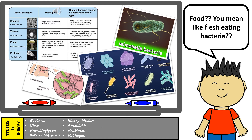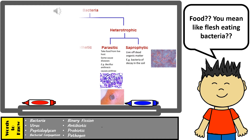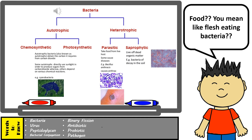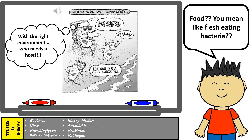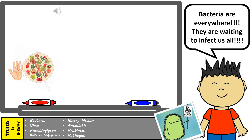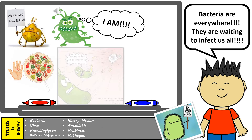Some bacteria are heterotrophs, which means they must consume organic material to obtain their energy. On the other hand, there are other types of bacteria known as autotrophs, which produce their own food either through photosynthesis or chemosynthesis. Just keep in mind that bacteria do not need a host to reproduce — they simply need the right environment and the right nutrients. Not all bacteria are harmful, and those that are, our body's immune system has a great plan of defense towards finding and eliminating the threat.